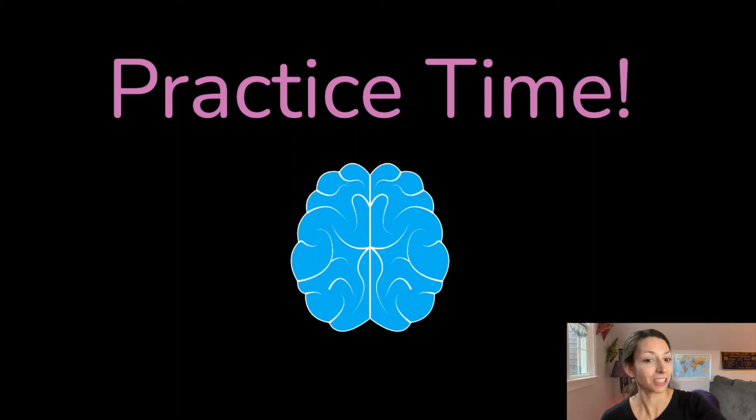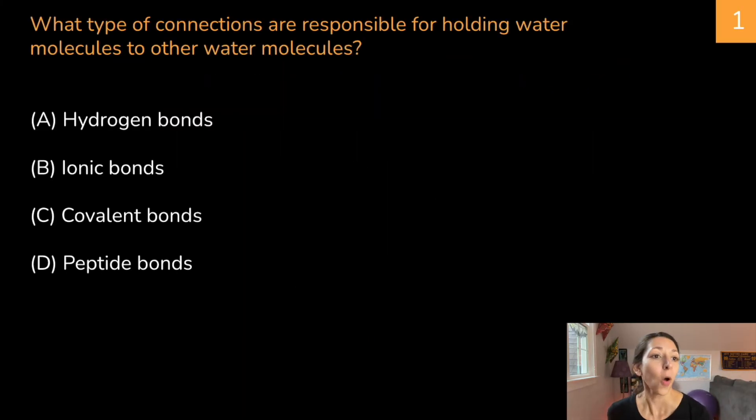Let's start with an easy one here. What type of connections are responsible for holding water molecules to other water molecules? A) hydrogen bonds, B) ionic bonds, C) covalent bonds, and D) peptide bonds. Take a second if you want to pause this video and answer on your own. If not, the answer is A, hydrogen bonds. Well, that's the only type of bond we talked about in this video. Even though there are many other types of bonds that are important in biology, hydrogen bonds are going to be the essential connection between water molecules that contributes to many of its properties.